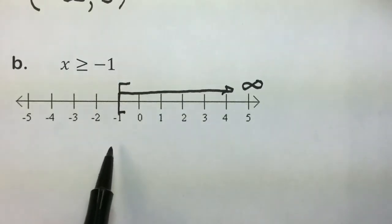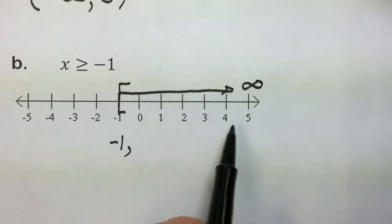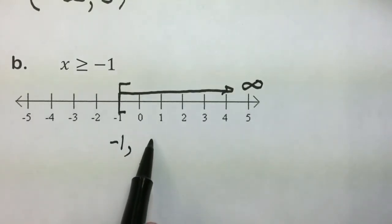We always start with the smallest value, which is negative 1. We're going as high as infinity, whatever that happens to be, and there is no end.